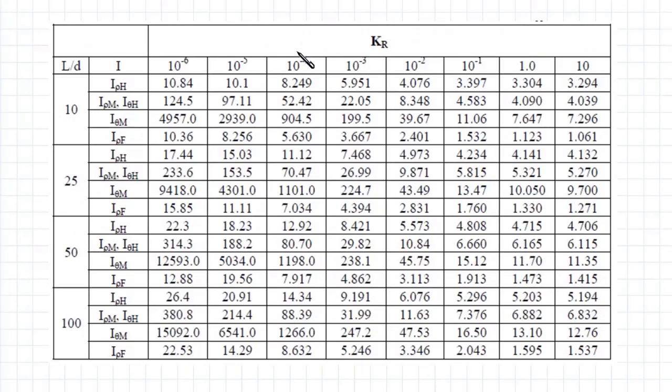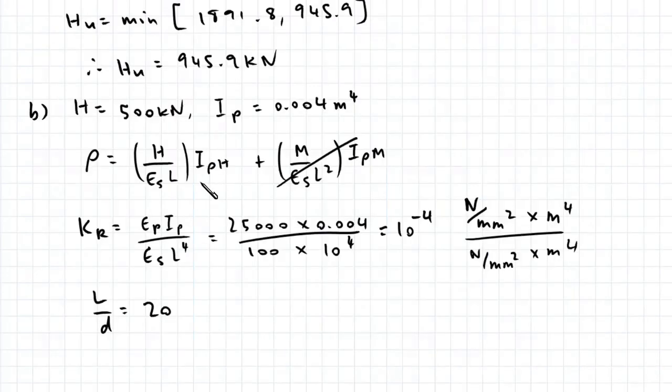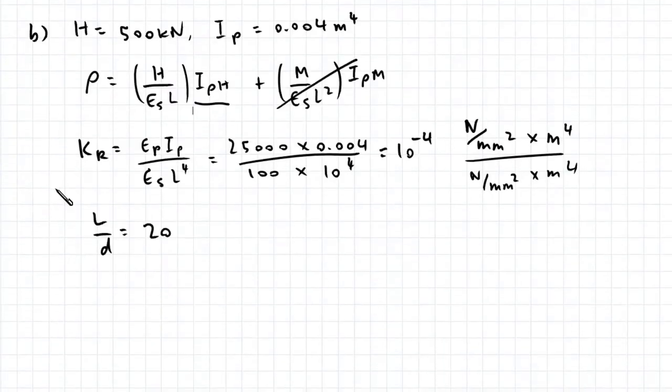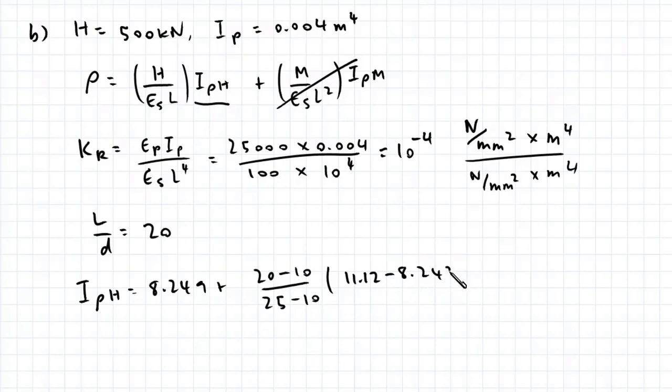If we go to this table over here, Kr is 10 to the power of negative 4, and our L on D is 20, which is in between 10 and 25. We're trying to find this factor IPH here, so we're going to have to interpolate between this value and this value. IPH is equal to 8.249 plus 20 minus 10 over 25 minus 10, multiplied by 11.12 minus 8.249. This gives us a value of 10.163.